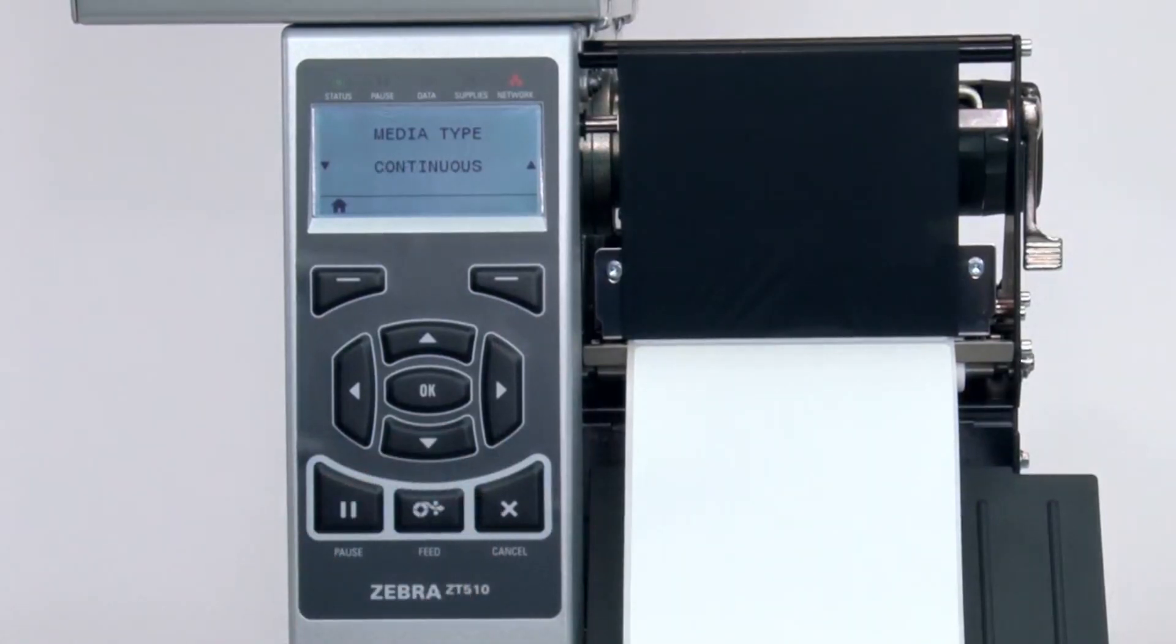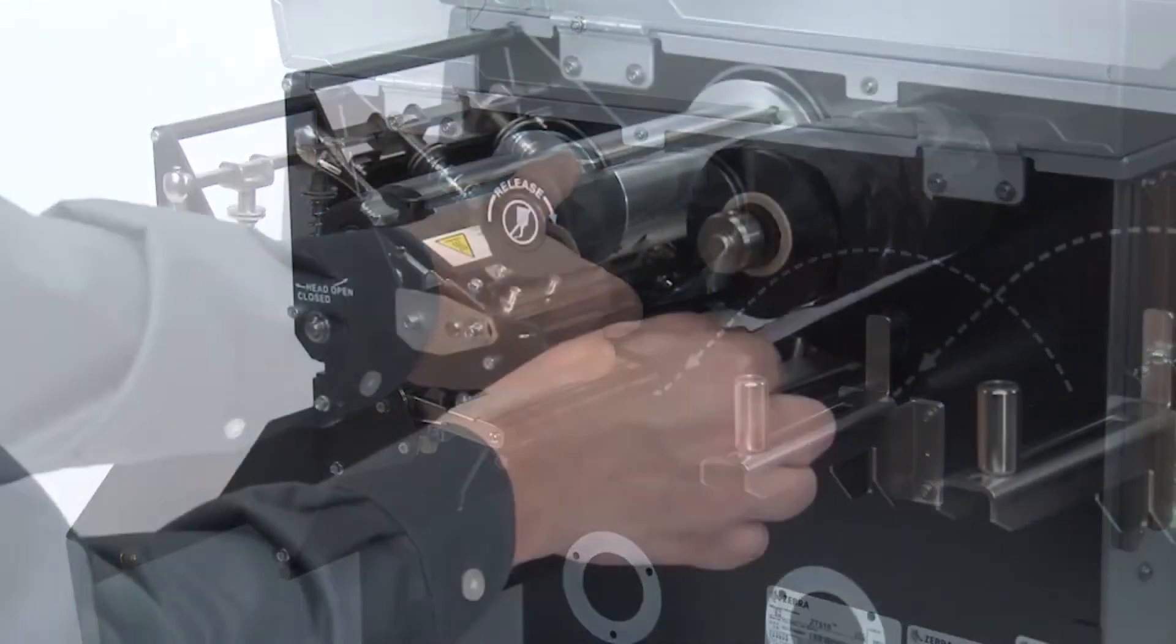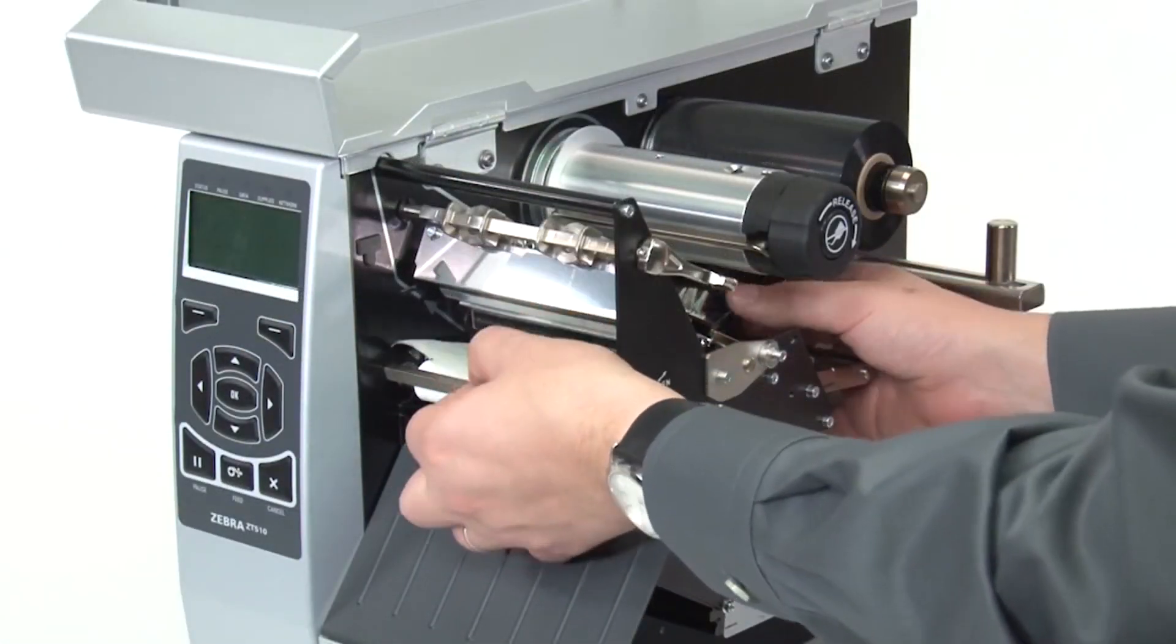Please note that the label length on continuous media is controlled by the file you're printing. Now, load the media and ribbon. Make sure the media and ribbon are fully inserted.